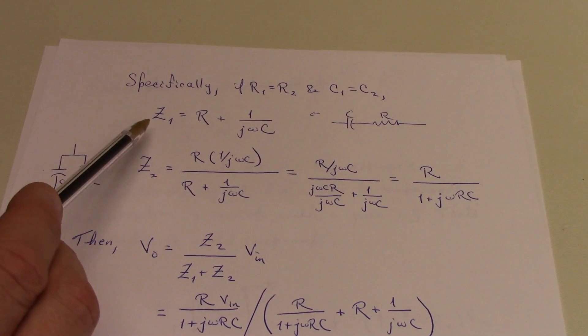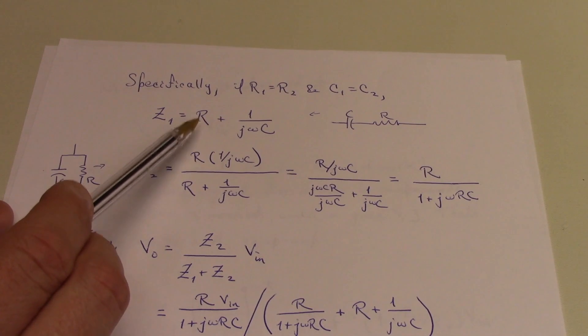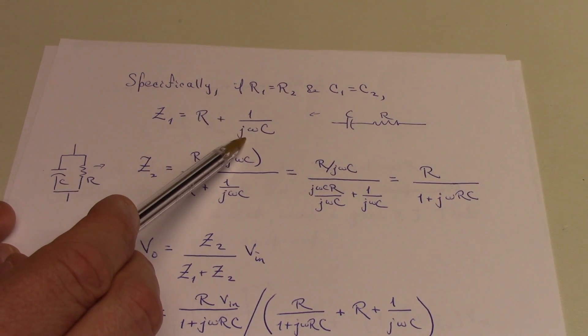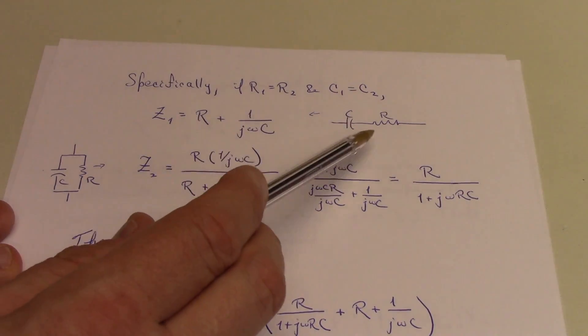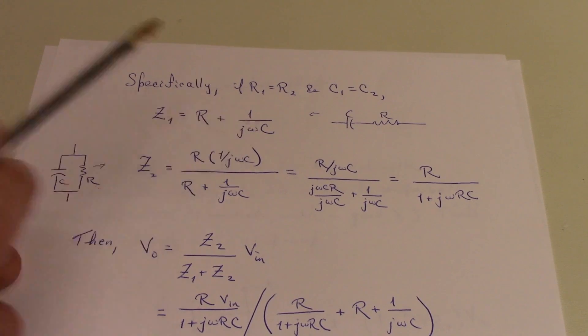When you begin fighting your way through this, we can write down the complex impedance Z1 in terms of the pure ohm resistance R plus a reactive component due to the capacitor. This is just the series RC branch, and the reactive component is just 1 over j omega c.